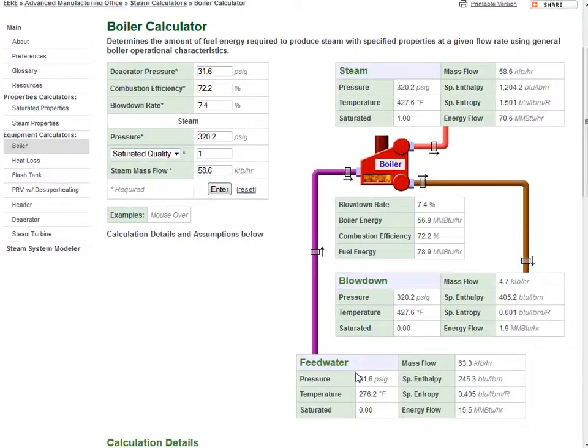It also provides associated properties for feed water supplied to the boiler, the blow down drain from the boiler, and the steam itself.